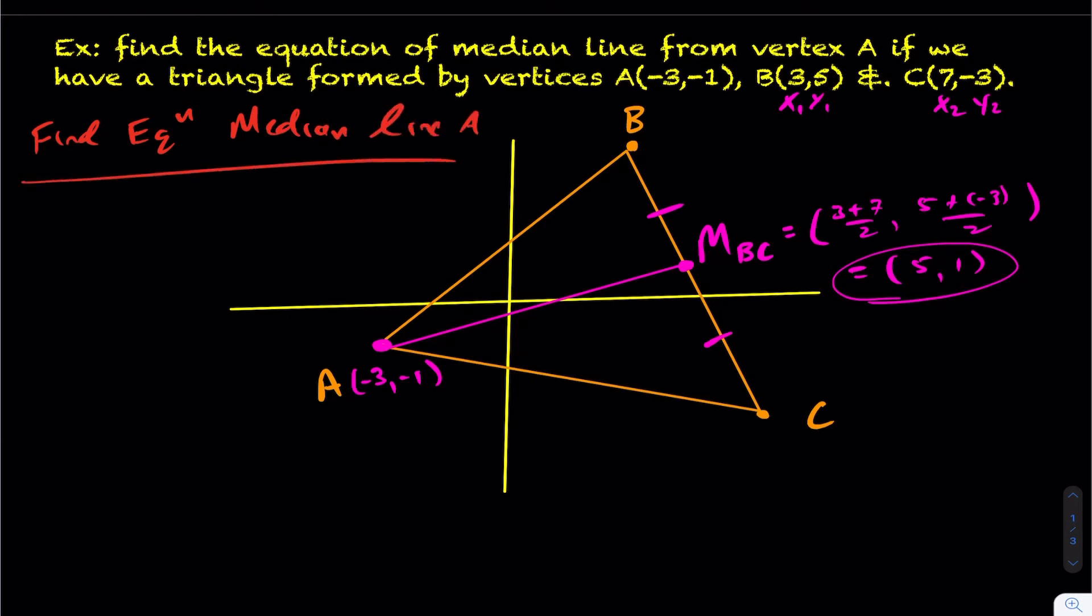So I want to find the equation of median line A. Well, if I want to find the equation of median line A, I have the point (-3, -1). And I also have the point, the midpoint BC, which is the point (5, 1). Now, again, if you don't remember how to calculate equations of lines given 2 points, I'll link a video on the top right-hand corner. You can click on that, and it'll go through how you actually calculate the equation of a line given 2 points.